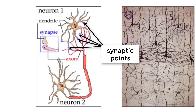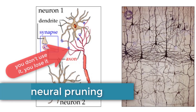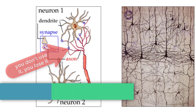This idea is very important because the synaptic connections between neurons that do not get used often do not get maintained by the cells and are eventually eliminated from the neural network. This phenomenon is called neural pruning and truly validates the statement: if you don't use it, you lose it.